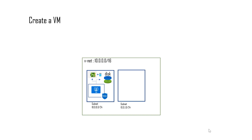These other resources include the disk, which contains the operating system running your virtual machine. Apart from that, it also creates a NIC — that is a network interface card. This network interface card will be connected to a public IP address and a private IP address, through which your virtual machine can communicate with other devices.